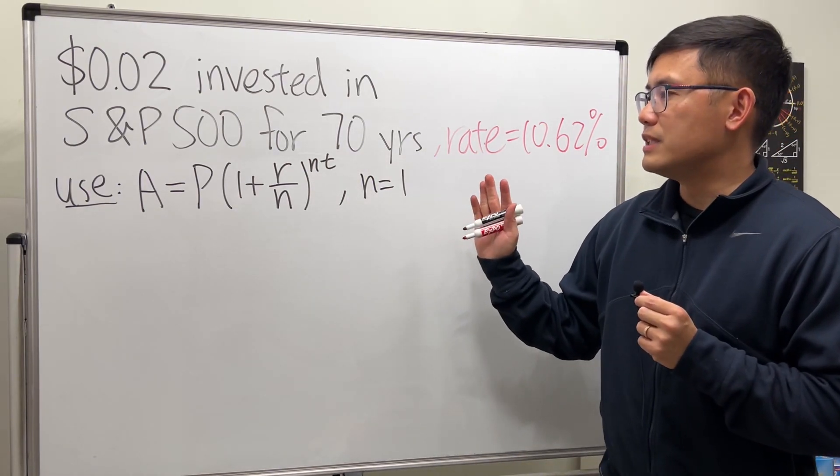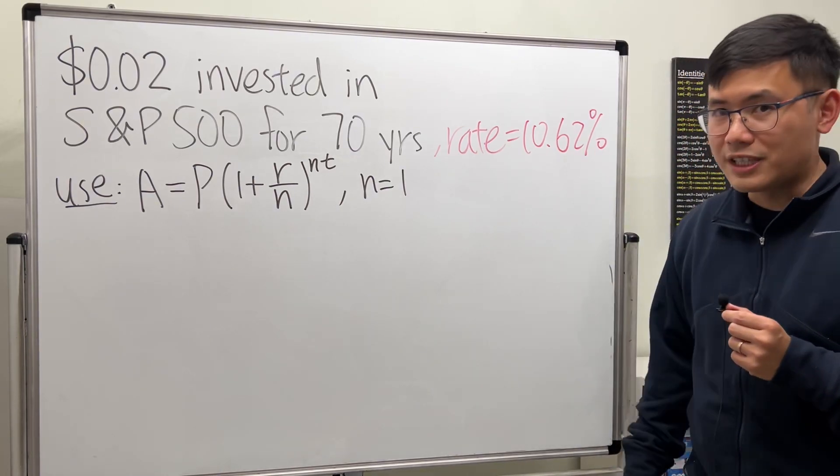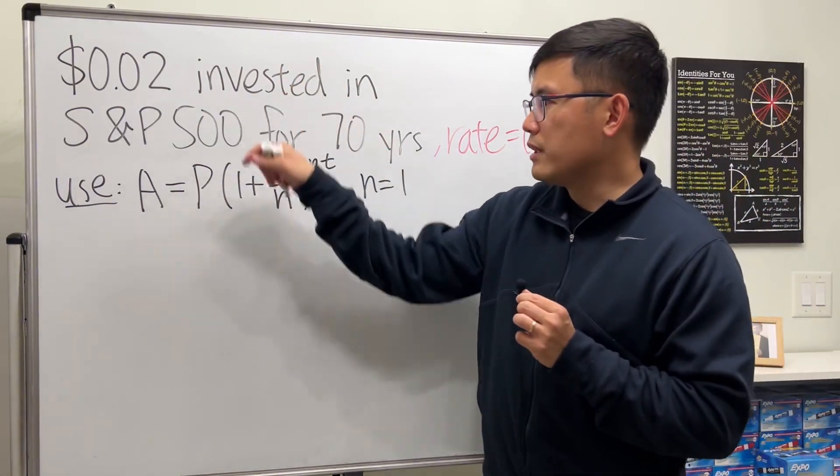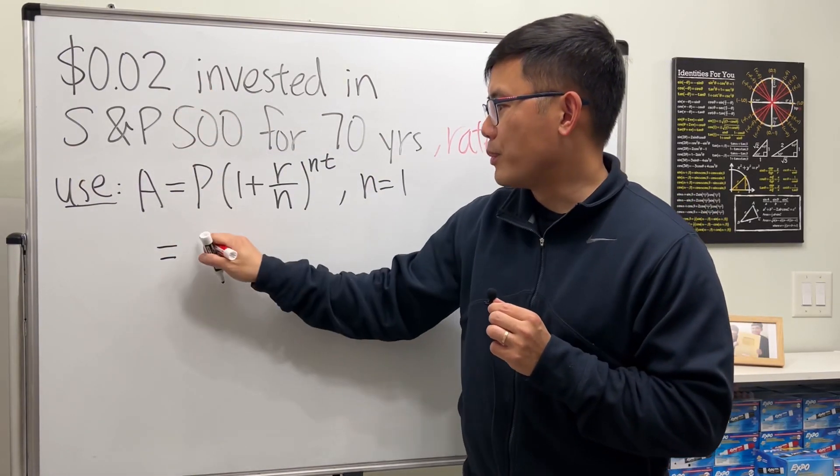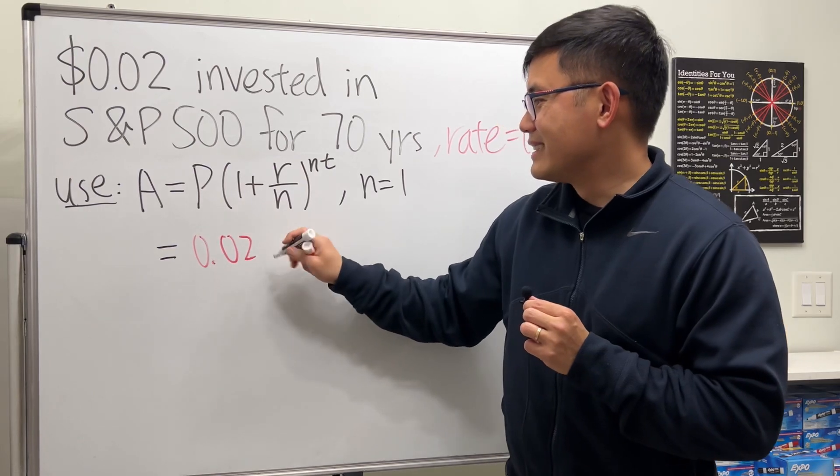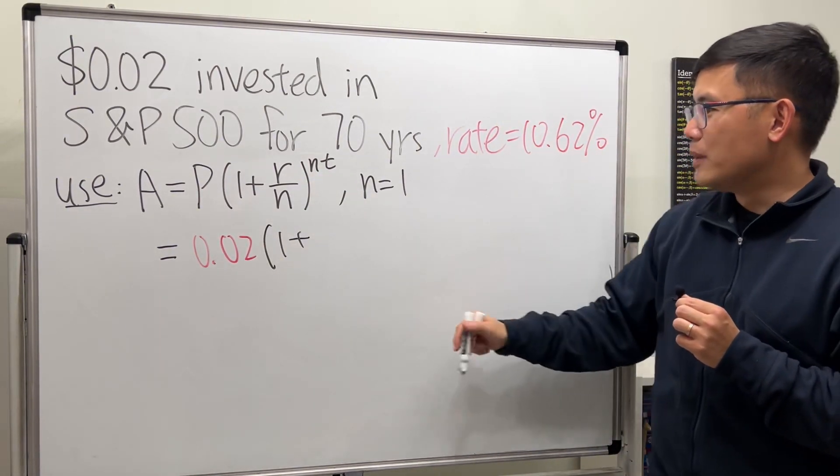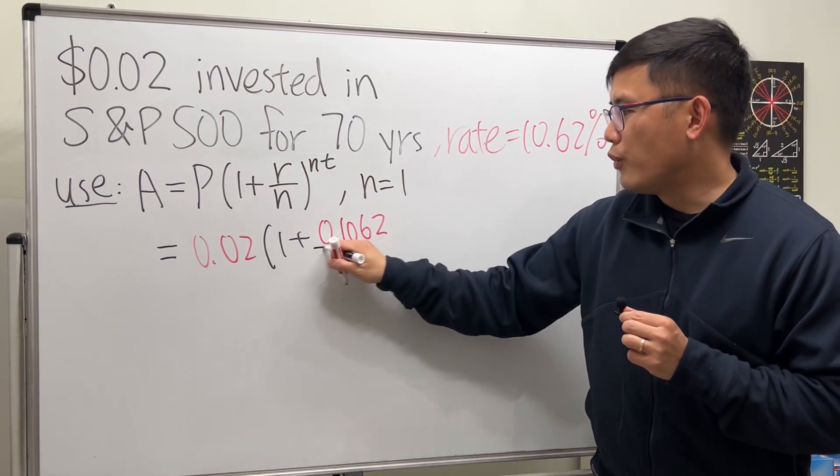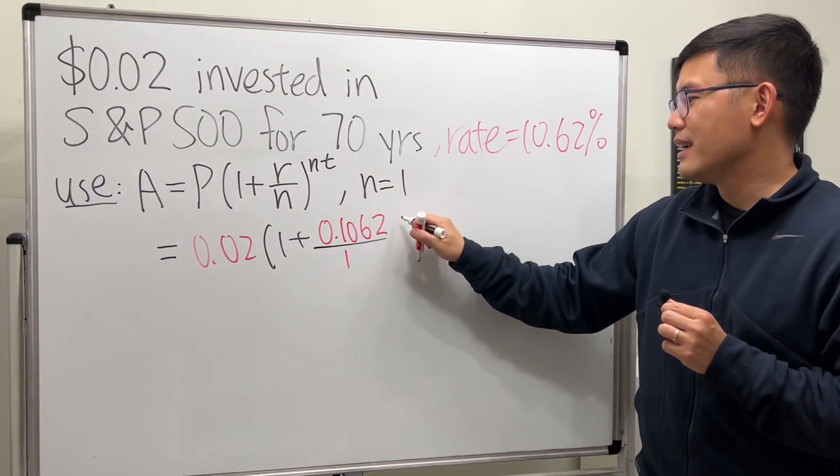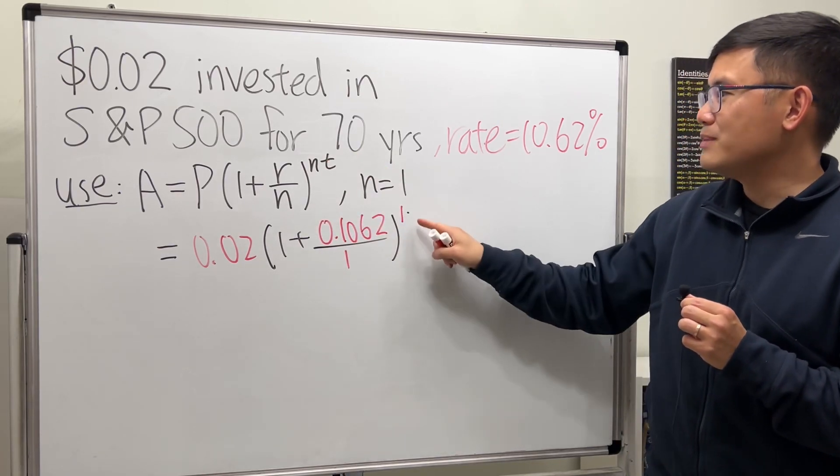Now let's just say it's a simple interest formula - every year we get 10.62 percent. Let's throw in all the numbers. This right here equals principal is 0.02 times 1 plus r, change this to decimal we get 0.1062 over 1 which doesn't matter, and then raise to the 1 again doesn't matter, times 70.